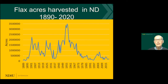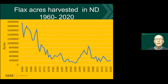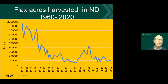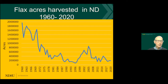As you can see, acreage went up and down. We had a peak in the 90s, but moving into the 2000s the numbers have been going down a bit. Focusing on 1960 to 2020, we are now around that 200,000-acre number.